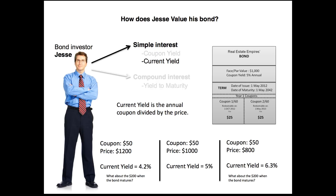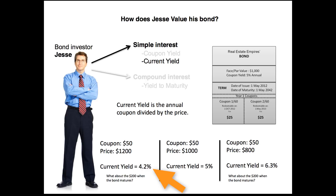When you talk about the current yield on a bond, you're typically talking about a bond that's been on the market for a few years — you're not buying it on the very first day. So you have to look at the price you're buying that bond for compared to the coupon payments. To calculate the current yield, take the coupon payment you would receive for one year and divide it by the price at which you bought the bond.